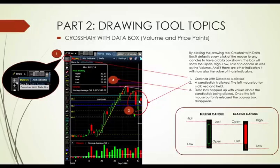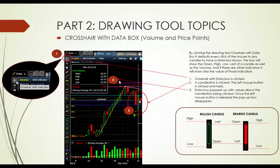Crosshair with data box — identifying volume and price points. By clicking the crosshair with data box drawing tool, it defaults every click of the mouse on any candle to have a data box shown. The box will show the open, high, low, and last of a candle, as well as the volume. If there are other indicators, it will also show the value of those indicators. Number one: the crosshair with data box is selected because it is highlighted. Number two: a candlestick is clicked. Number three: a data box pops up with values above the candlestick. Once the left mouse button is released, the pop-up box disappears.